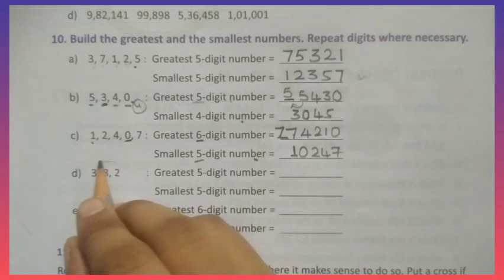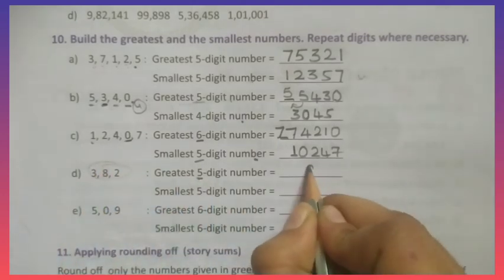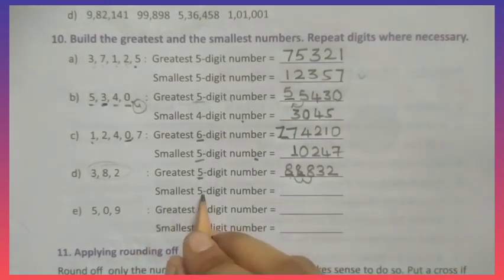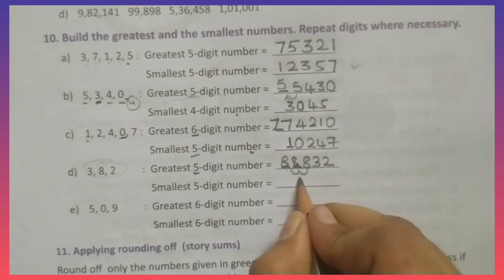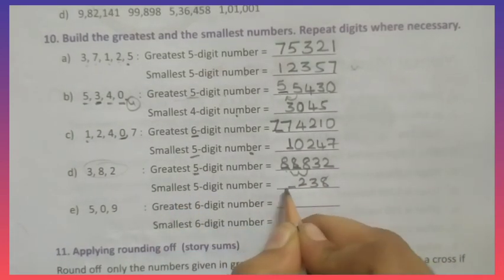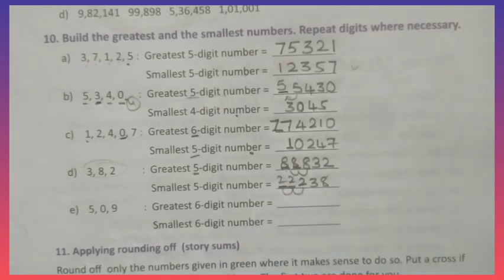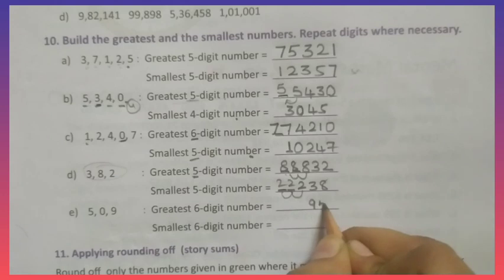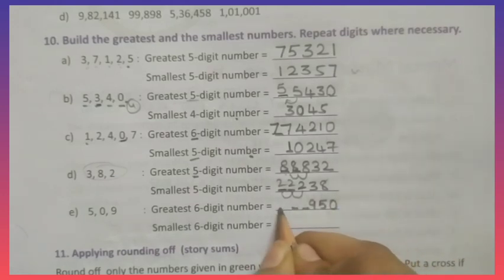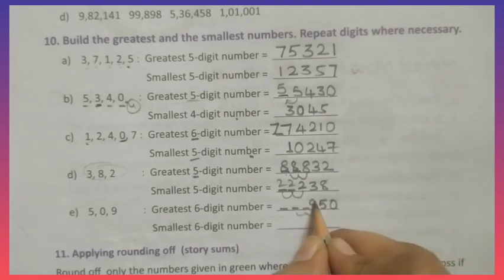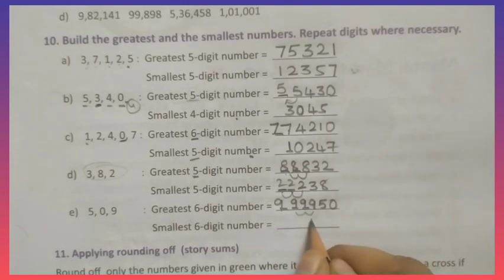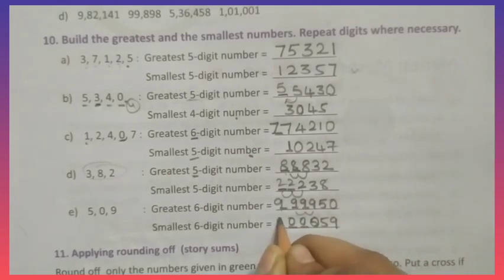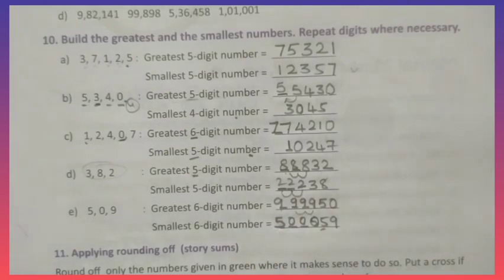Next, greatest 5-digit number — only 3 digits given. Arrange from big to small and repeat as many times as needed. For the smallest 5-digit number, arrange small to big: 2, 3, 8, then repeat the smaller digits for the remaining 2 places. For greatest 6-digit number from digits 9, 5, 0: arrange 9, 5, 0 and repeat to fill 6 places — 9, 9, 9, 5, 0 becomes the greatest. For smallest: don't start with 0, so start with 5: 5, 0, 0, 5, 9 — giving 5,00,59.